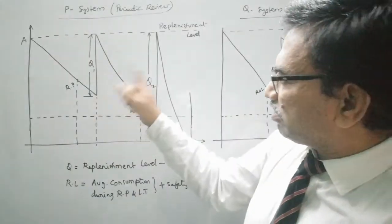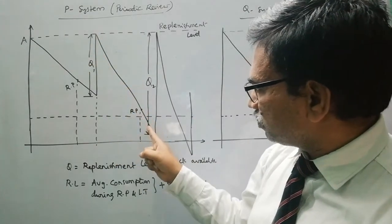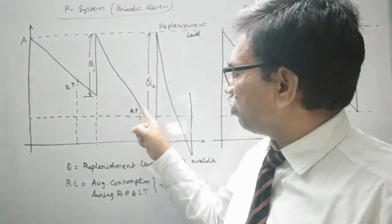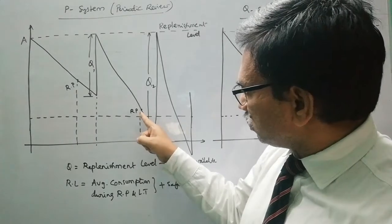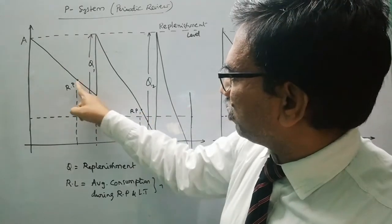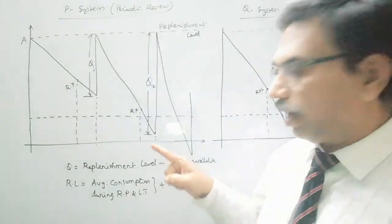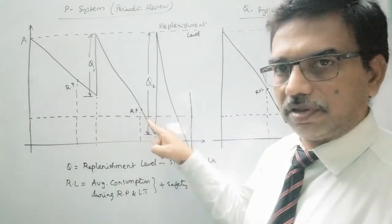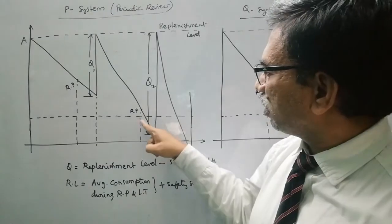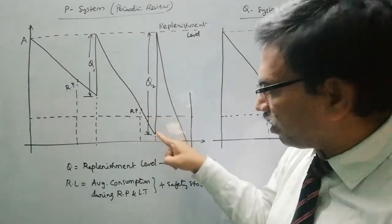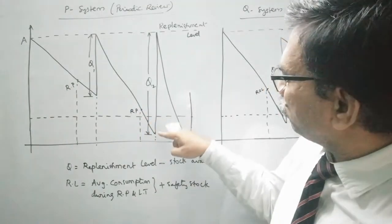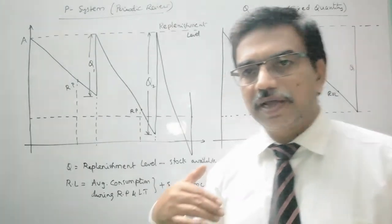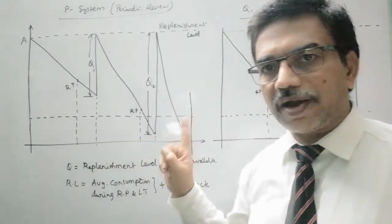Considering the consumption during the lead time, an order is placed for quantity Q1. Here the quantity Q1 is small. For the next cycle, if you observe, the rate of consumption is high; as a result the inventory level has come down very near to the safety stock when the review is done. Considering the consumption during the lead time here — which is somewhat less in one case and more in another — the ordering quantity is Q2. Q1 and Q2 are different, meaning the review period is fixed but the ordering quantity will differ in this system.